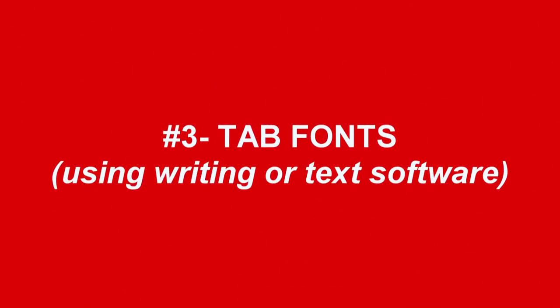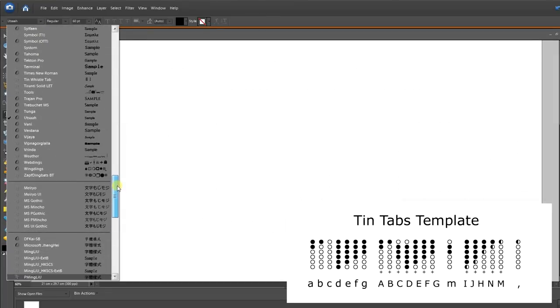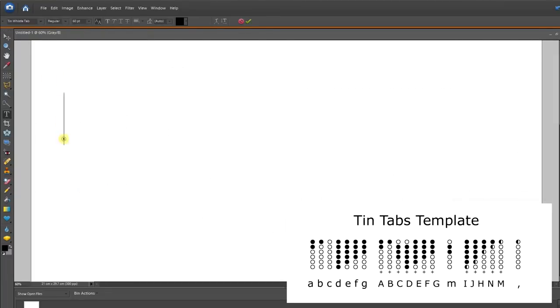Option three is to use a font. There are a few tin whistle and native flute fonts out there, and I have put some links in the description to where you can find these. The one I use at the moment is called Tin Whistle Tab. Basically, there's a series of letters — which I'll show you on screen now — that you type on your keyboard, and these come out as the equivalent of a tin whistle tab. They don't show any letters underneath, so you can use this for any key of whistle. There's also the option to add half holes, which is great.